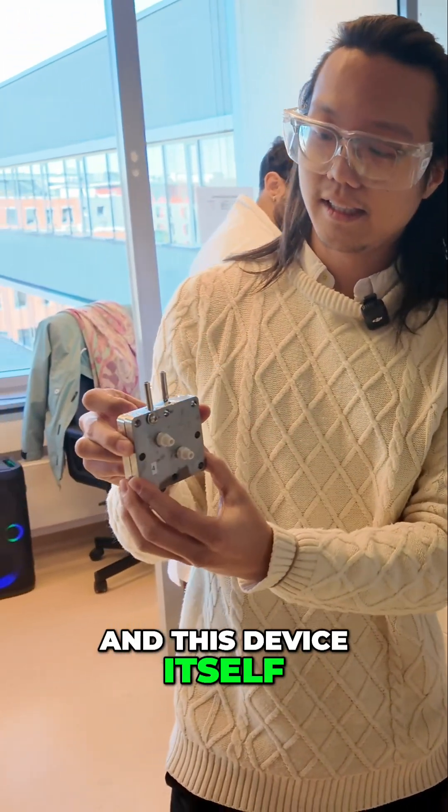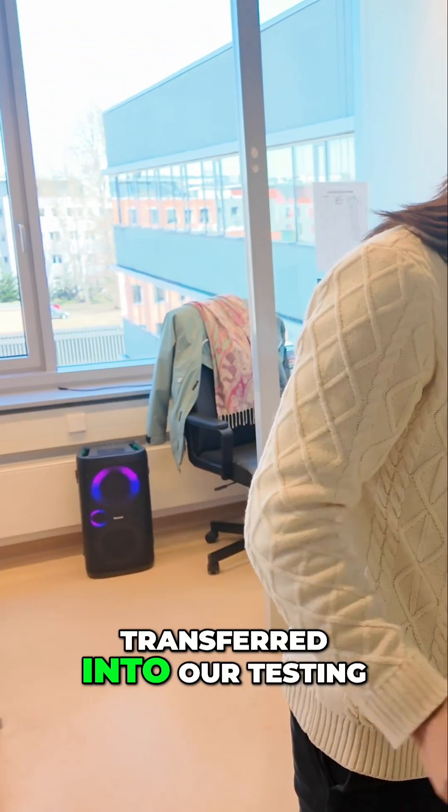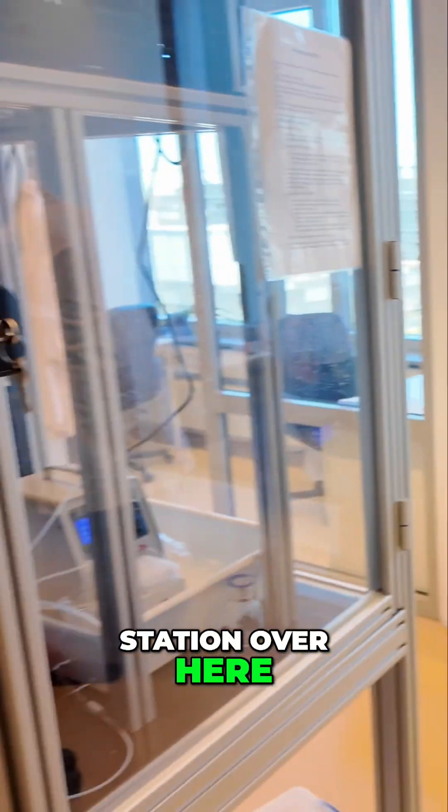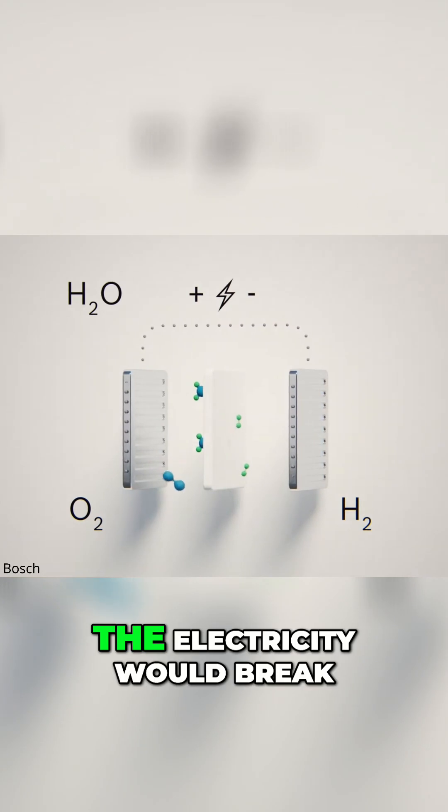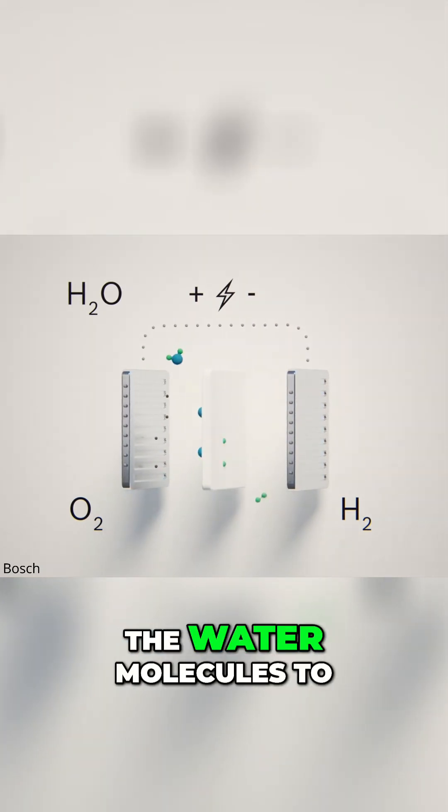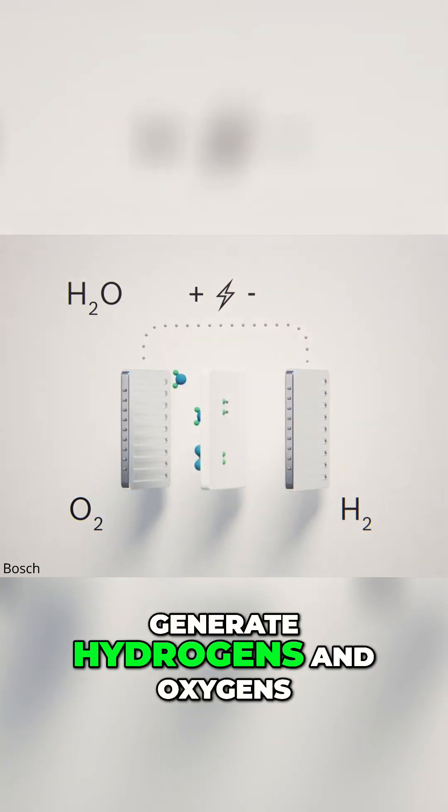And this device itself then gets transferred into our testing station over here. Essentially, you have water that's flowing through. And by applying electricity to it, the electricity would break the water molecules to generate hydrogen and oxygen.